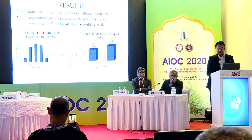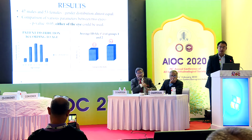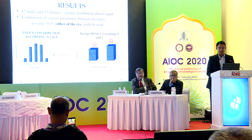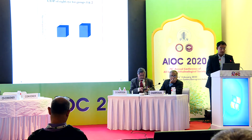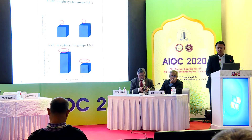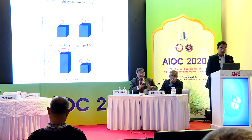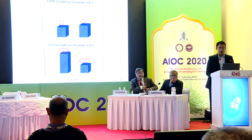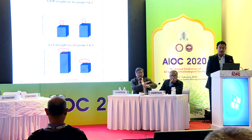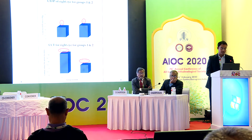These were the average HbA1c values for Group 1 (HbA1c less than 8%) and Group 2 (HbA1c more than 8%). The charts show the corrected IOP values and central corneal thickness for the right eye in both groups, with average values displayed for all 100 patients.